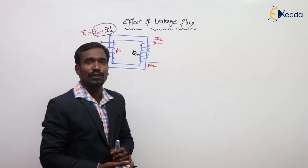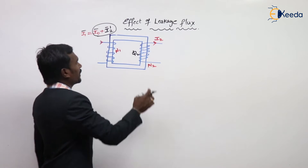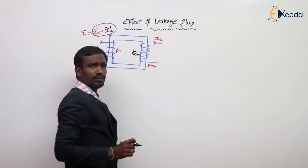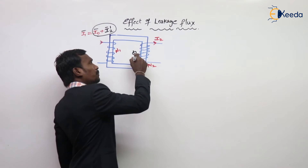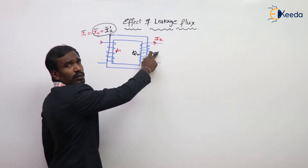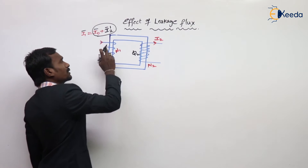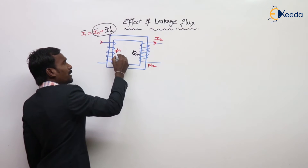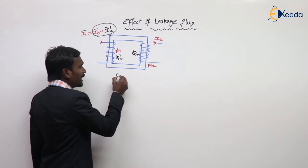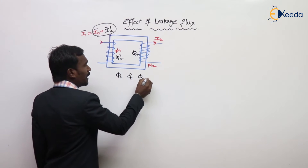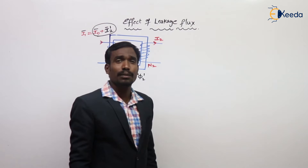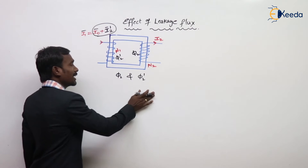Effect of Leakage Flux. For example, this is my transformer. When load is connected here, current flows through this winding and it produces the flux Phi2. Due to this load, some flux produces in the primary that is called Phi2 dash. This Phi2 and Phi2 dash should be equal in magnitude and opposite in direction — ideally.